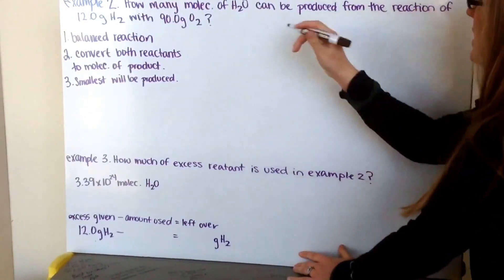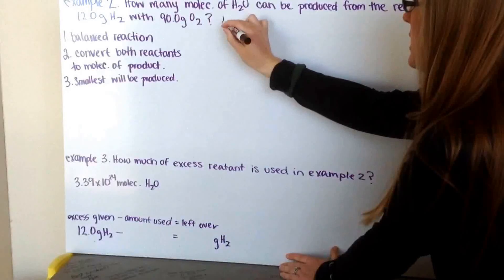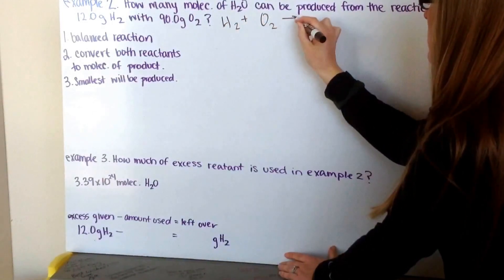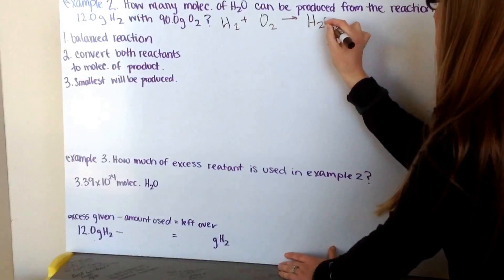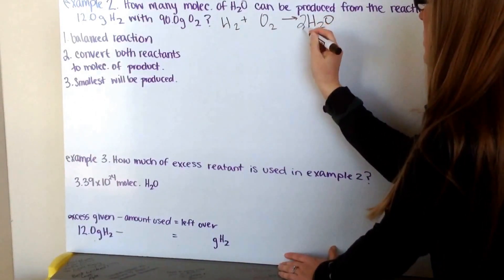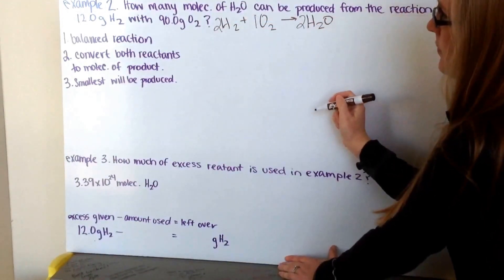Well, this tells me that I'm producing water from hydrogen and oxygen. So, I need H2 plus O2 yields H2O. To have this balanced reaction, I need to have a 2 here, a 2 here, and a 1 here.